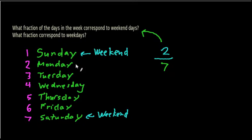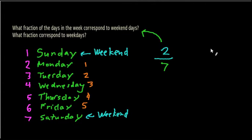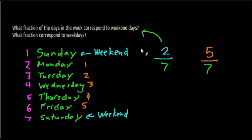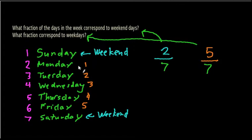How about weekdays? Well, how many days are remaining? We have Monday, Tuesday, Wednesday, Thursday, and Friday — that's five weekdays out of a total of seven possible days. And this makes sense: if there are seven total days and five of them are weekdays, then two of them must be weekends. Similarly, if there are two weekend days out of a total of seven, then the remaining five must be weekdays. Hopefully that made some sense. Let's move on to another problem.